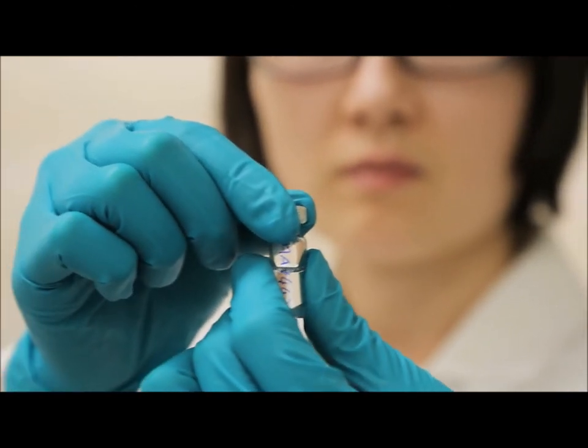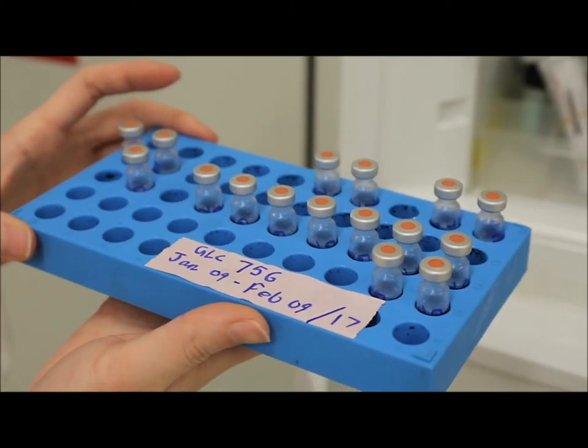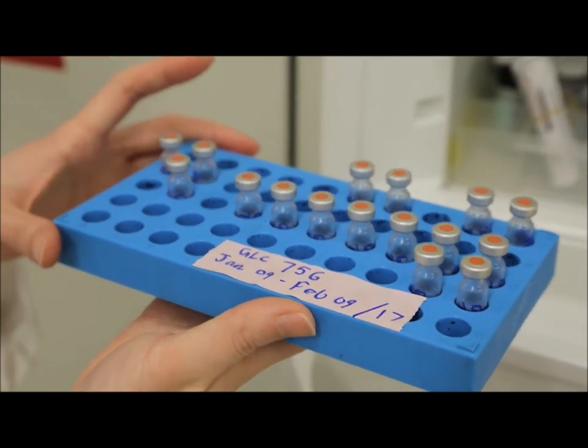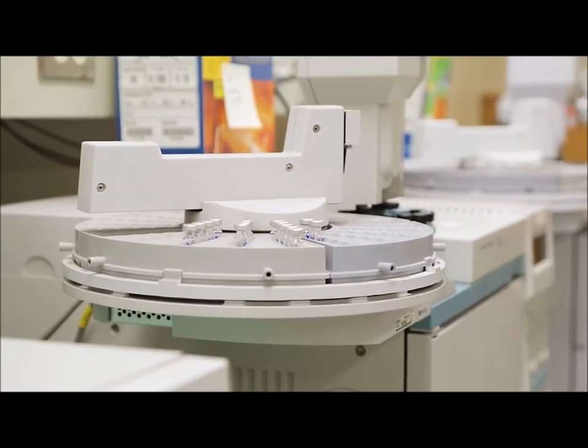We also run a check sample when we run samples. The check sample we use is GLC 756. This sample is prepared monthly and is run every time we run samples and is stored in the freezer.